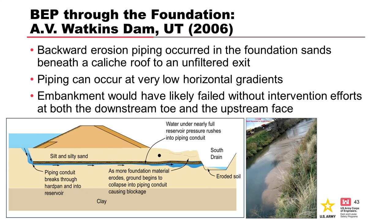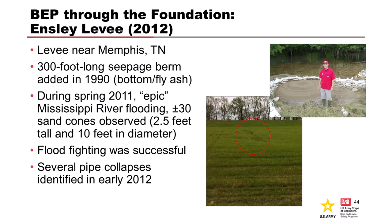AB Watkins Dam is a reclamation dam in Utah where backward erosion piping occurred in the foundation sands beneath a caliche or hardpan layer — a roof formed by that material — to a horizontal unfiltered exit in a drainage ditch at the downstream end. A serious incident occurred in 2006 at very low hydraulic gradients. The embankment would have likely failed without successful intervention at both the downstream toe and upstream face — they placed a quickly-constructed filter berm at the downstream end and isolated where water was coming in at the upstream end, putting fill over both areas.